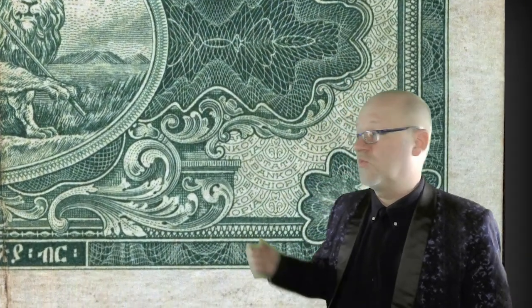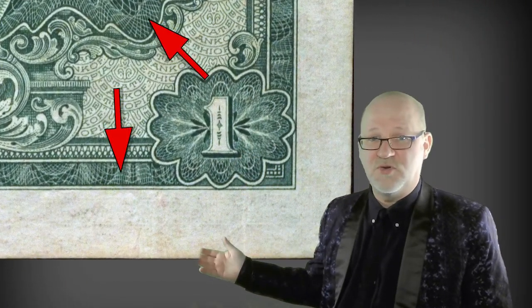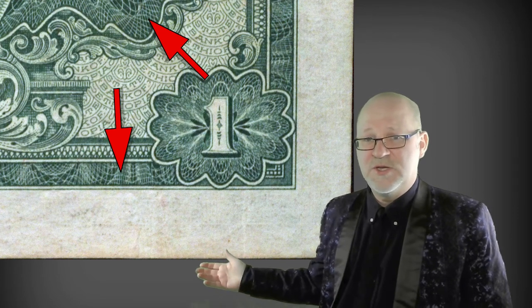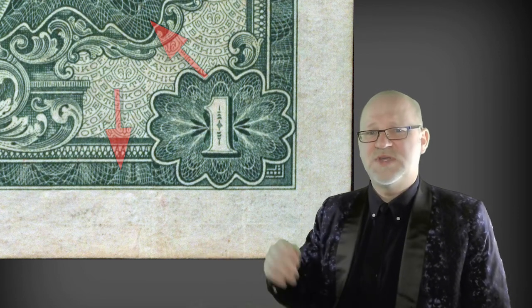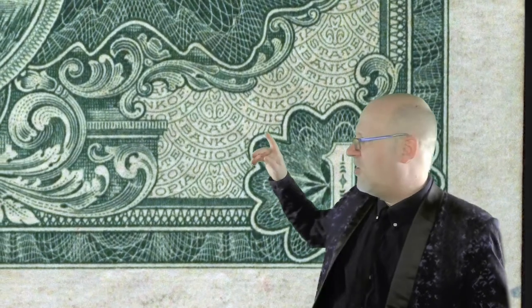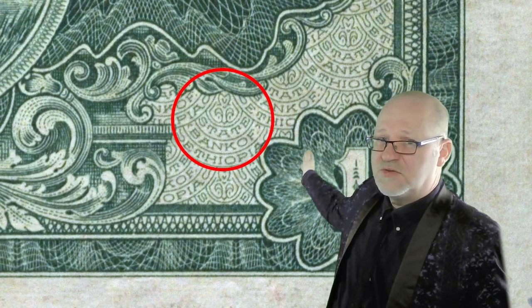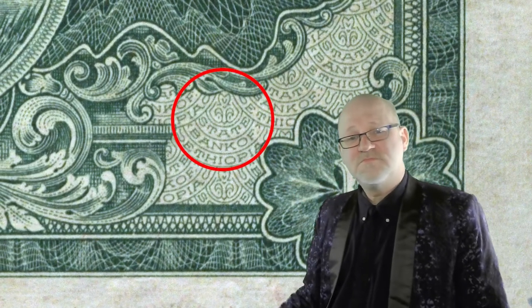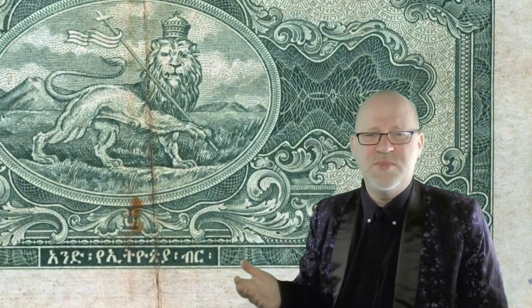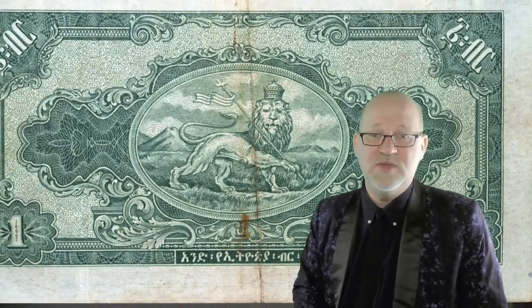We also have intricate web-like designs covering the background in most places on the reverse. In some areas, however, the design is formed of English words repeating in arcs: 'State Bank of Ethiopia.' The color is entirely green on the reverse, and it appears there was a bit of money-saving concern in printing the note. It is impressive overall, but without a watermark and with limited colors, it would be easier to print than many of the more elaborate currencies circulating in the world, even at the time.